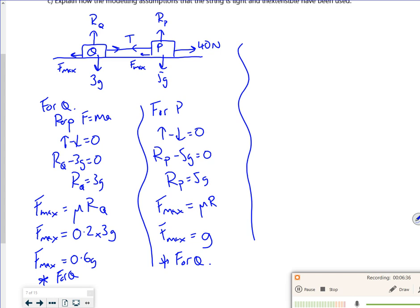Let's have a look at the whole system then. Let's do it all in one go. So if you imagine for the whole system, I've got 40 newtons going that way. I've got 8g acting down. So I'm going to work out the acceleration. And then I've got this total Fmax, which would be 0.6g plus 1g. So it's going to be 1.6g. Are you happy with that? So I've added the 0.6 and the 1g together.